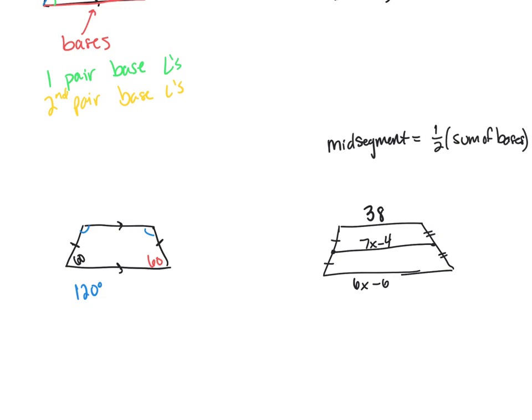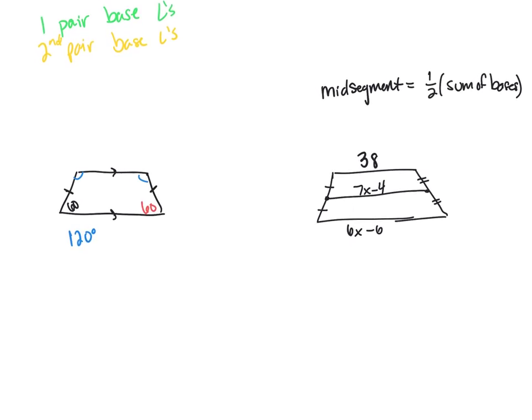So if we were to think about setting up an equation, 7x minus 4 equals one half, and then I have my two bases, that's 6x minus 6 and that 38, so I'm going to add those together and say 6x minus 6 plus 38, and then I work to solve that equation.